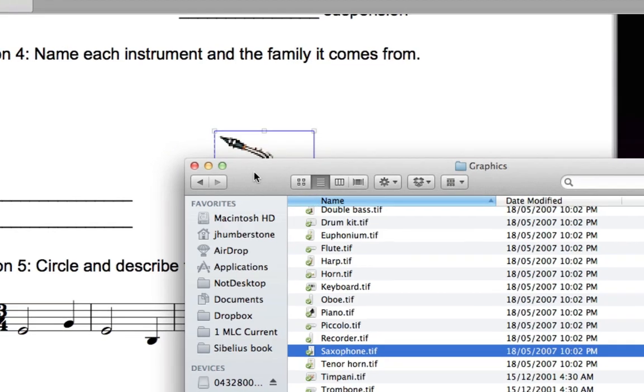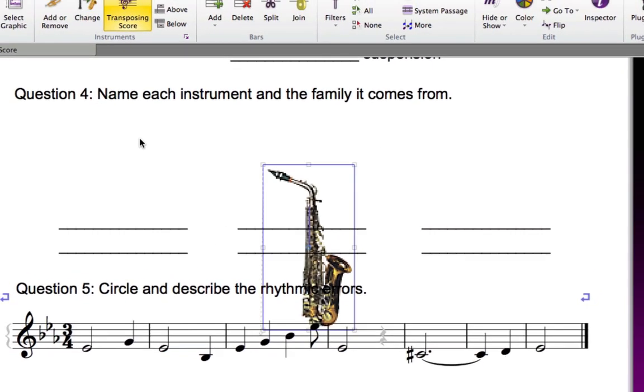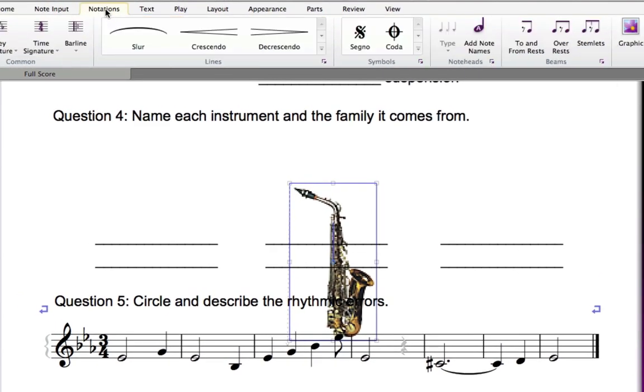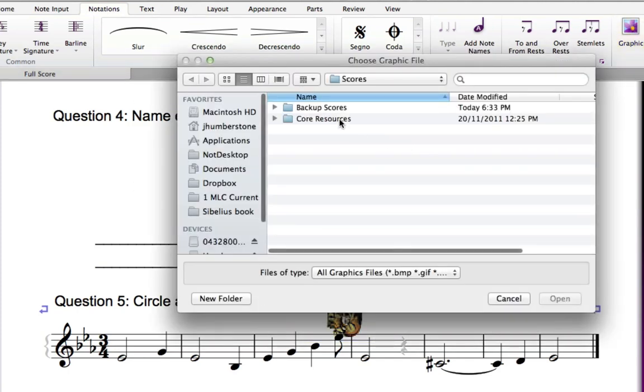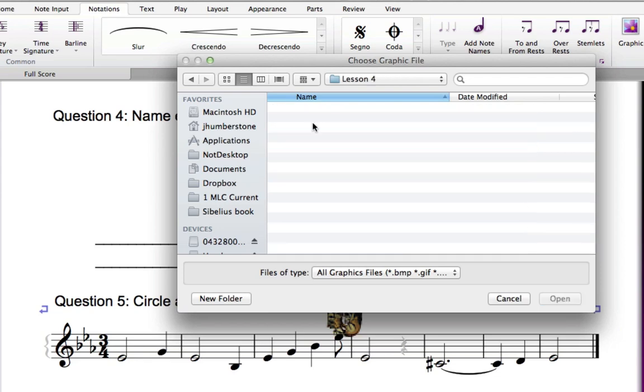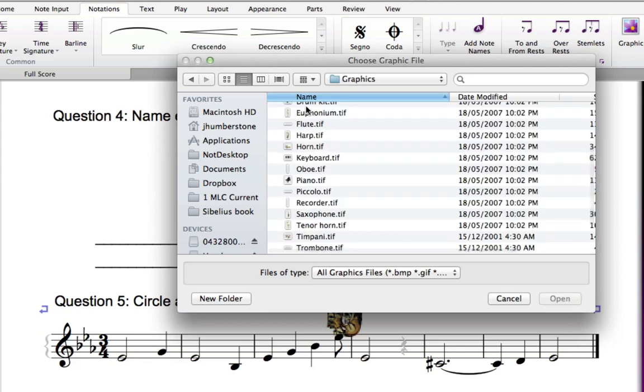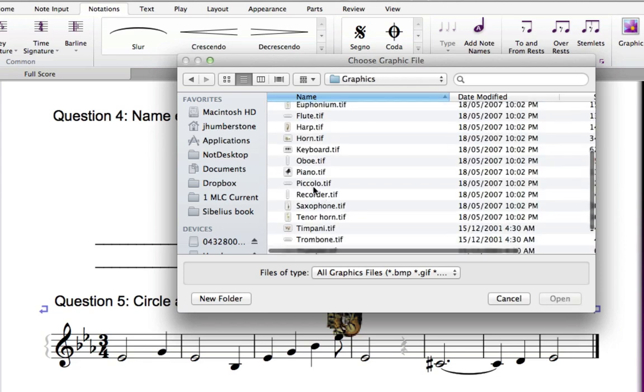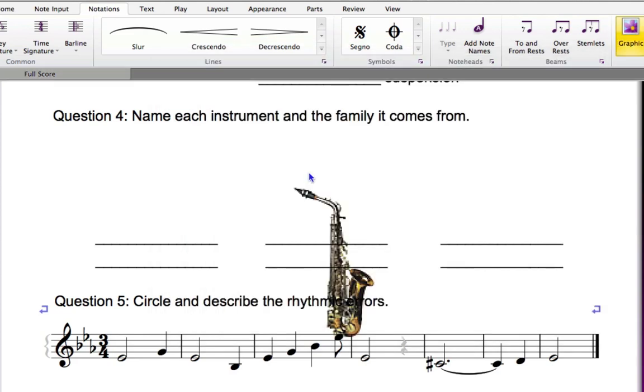Or, in Sibelius, go to the Notations tab of the ribbon and choose the Graphic button. An open dialog box will then appear, and you can locate your Core Resources folder and the Enclosed Graphics folder. After selecting the image file, if you didn't have a selection, you'll need to click on the score to place it.